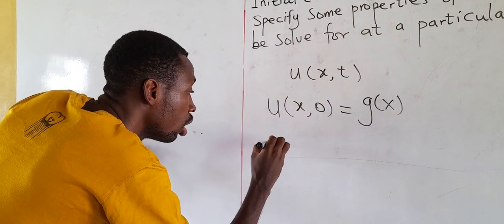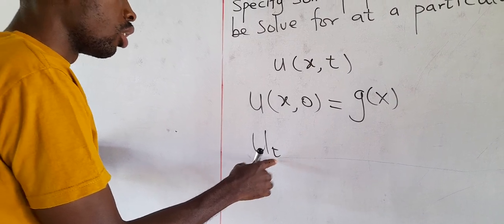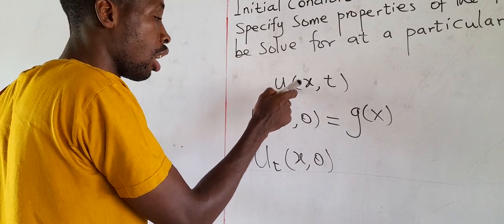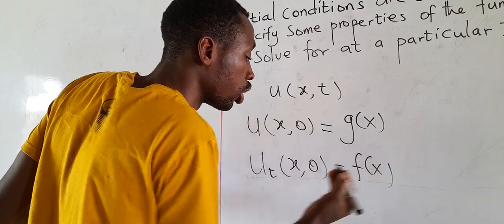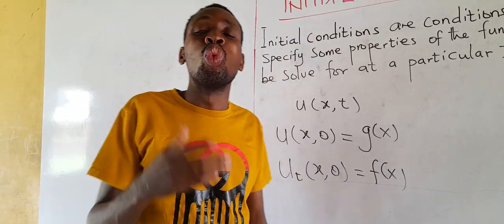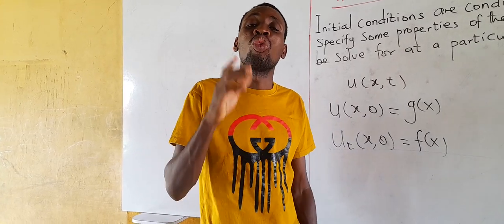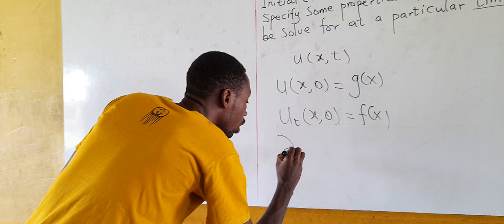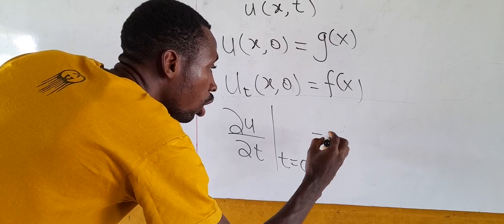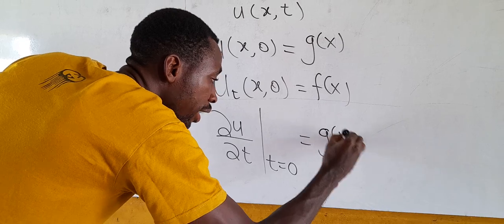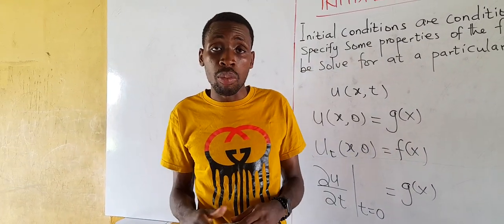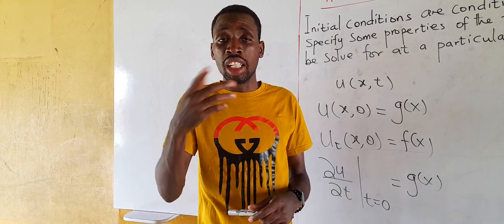Similarly, if the condition involves the time derivative, such as ∂u/∂t evaluated at t = 0 equals some function of x, that is also an initial condition. The key rule: if the condition is subjected to a time variable, then that condition is an initial condition.